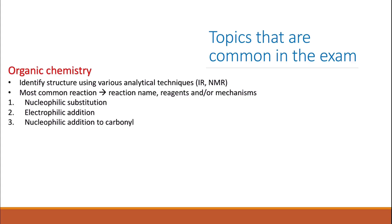Nucleophilic addition to the carbonyl group is very common in the exam. The most common nucleophiles used are cyanide and hydride (hydrogen with a negative charge). Be careful — when they ask about the addition of cyanide, especially to a ketone, you end up with two different stereoisomers. They may ask about these isomers as well. Addition-elimination reactions to acid derivatives — esters, acid chlorides, or anhydrides — are also very common, and the mechanism is frequently asked.